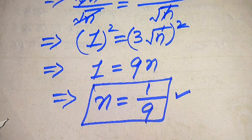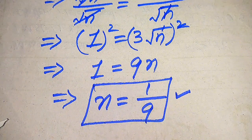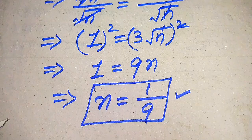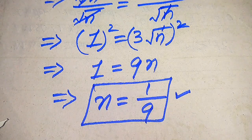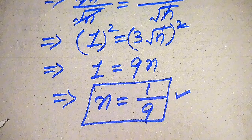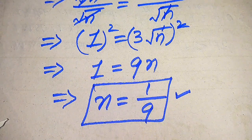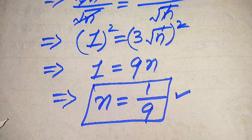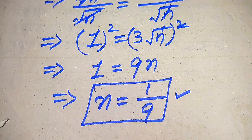The roots which satisfy our given equation are called solutions, and the roots which do not satisfy our given equation are called extraneous roots. In this problem, both n equals 0 and n equals 1 over 9 are solutions. This is the final answer. Thank you so much for watching this video — please subscribe to my channel for more exciting videos.